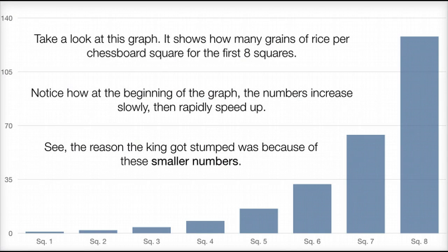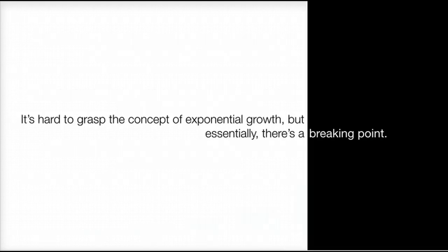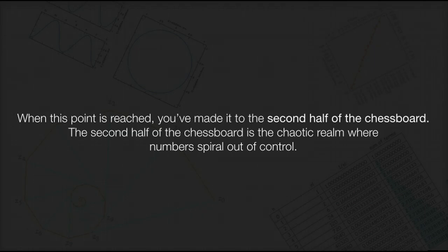Take a look at this graph. It shows how many grains of rice per chessboard square for the first eight squares. Notice how, at the beginning of the graph, the numbers increase slowly, then rapidly speed up. The reason the king got stumped was because of these smaller numbers. It's hard to grasp the concept of exponential growth, but essentially there's a breaking point. When this point is reached, you've made it to the second half of the chessboard — the chaotic realm where numbers spiral out of control.